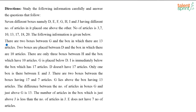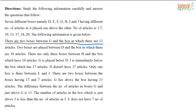The first clue: there are two boxes between G and the box which has 13 articles. There can be two cases — either G is on top of 13, or 13 is below G. But another piece of information says G lies above the box having 13 articles. So if this is G, then with two boxes in between, this will be the box which has 13 articles.